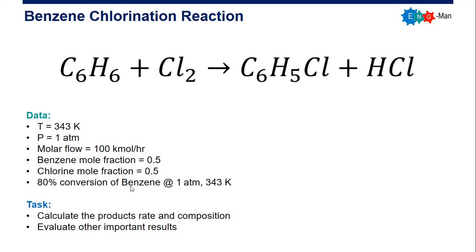The reaction will have 80% conversion of benzene at these pressure and temperature conditions of the reactor. Our task is to calculate the product rate and composition — the effluent of the reactor — and evaluate other important results.